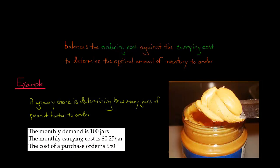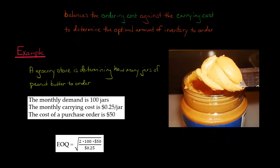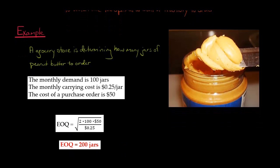Now we can just plug the numbers into our formula. We've got 2 times the demand — we're looking at a monthly period, so the monthly demand is 100 jars — times the ordering cost of $50 per order. That's our numerator. Then we divide that all by the carrying cost, which is 25 cents — the carrying cost for one jar of peanut butter for one month. So we take 2 times 100 times 50, divide it by 0.25, and then take the square root of that resulting figure, and that is the quantity we should be ordering.